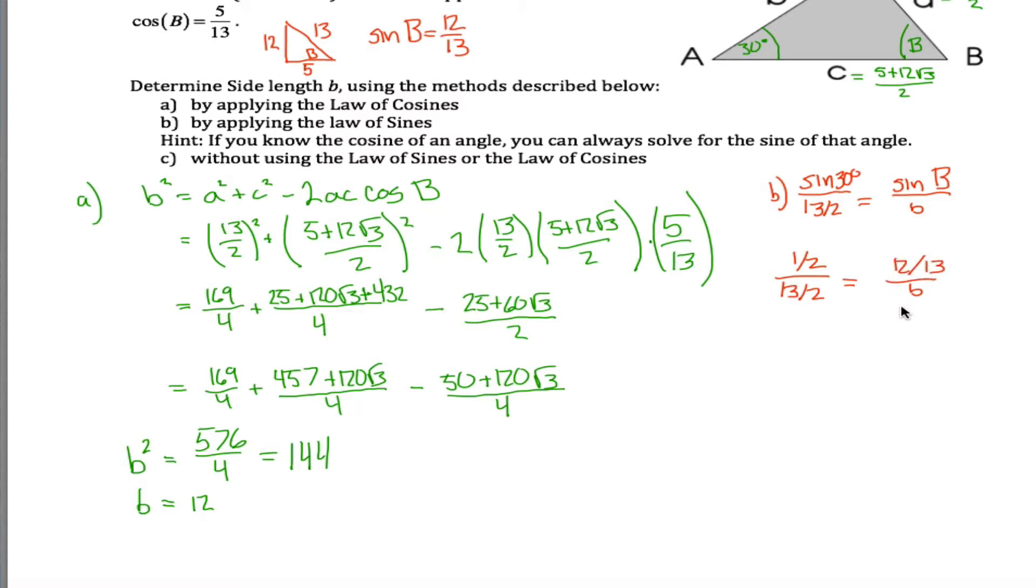So I can say that I got the sine of 30, which is one half divided by 13 halves is equal to 12 thirteenths divided by b. Lots of fractions going on, but you can make life a lot easier. On this side, multiply the top and the bottom by 2, makes that 1 thirteenth. And that is equal to, if you think about this, how should I do this? How about this? Also multiply both sides of the equation by b. That will make this b over 13 is equal to 12 over 13.